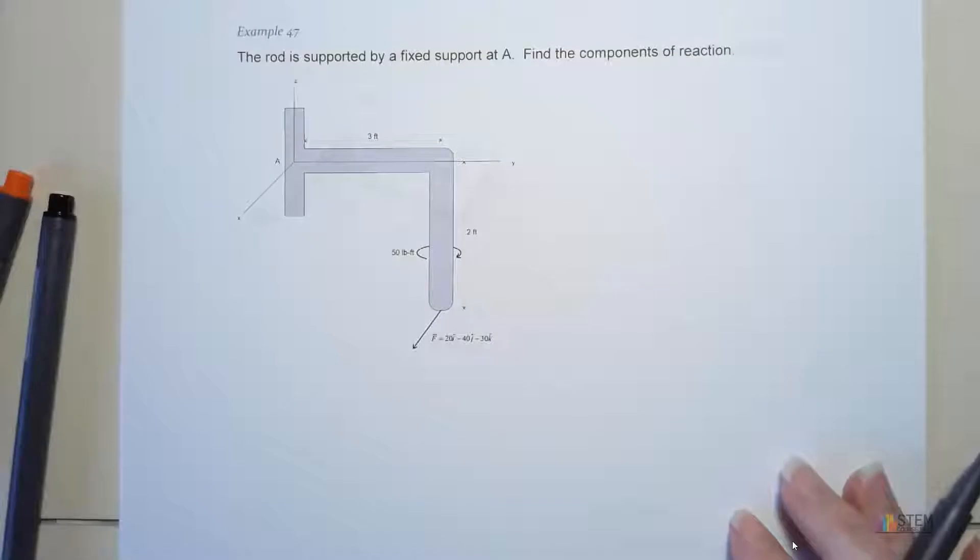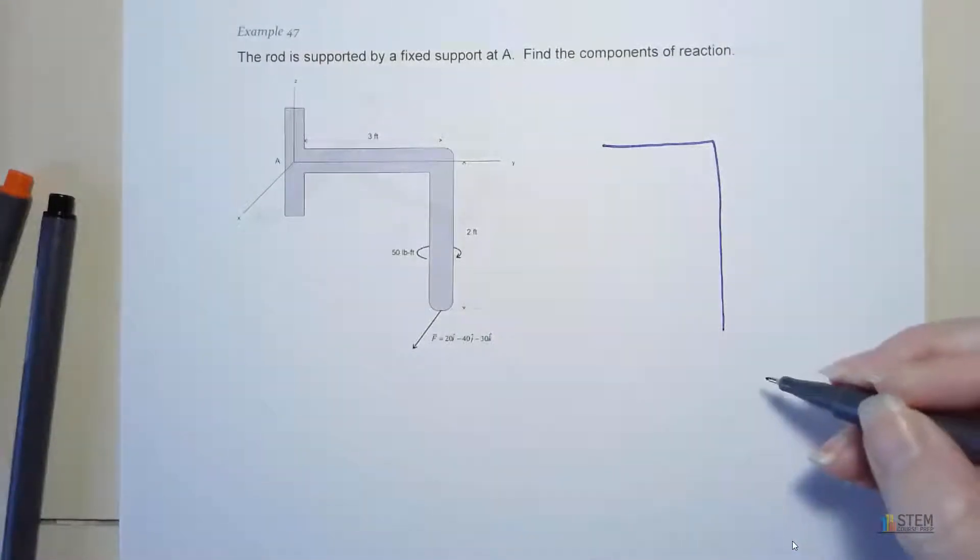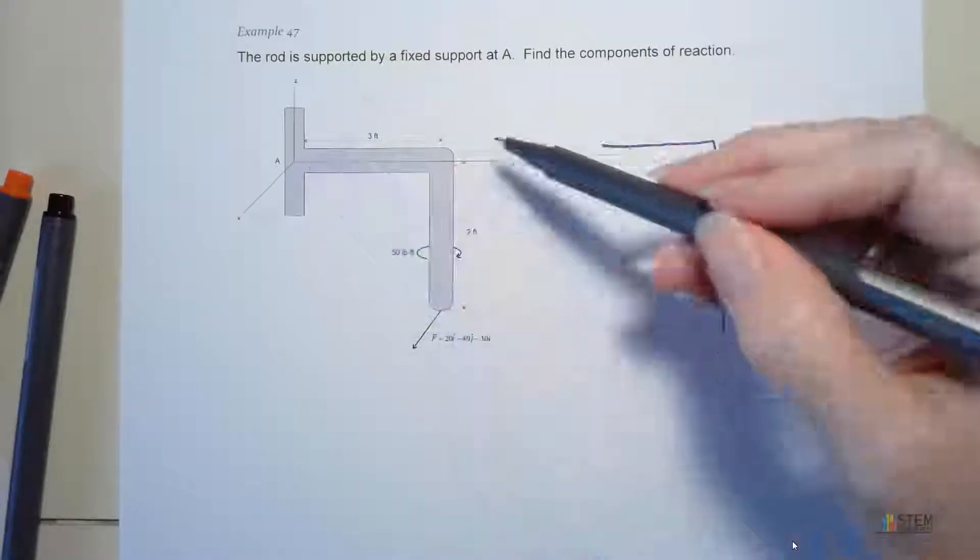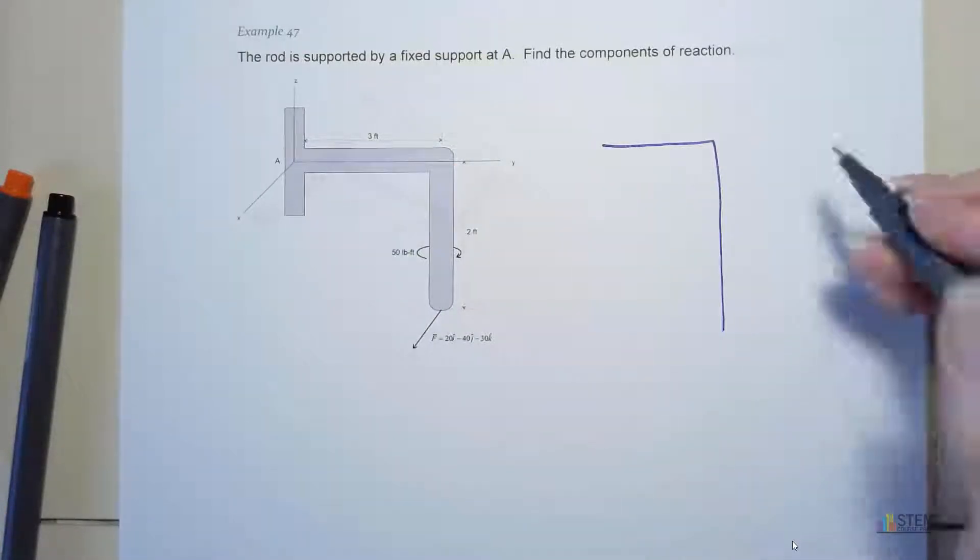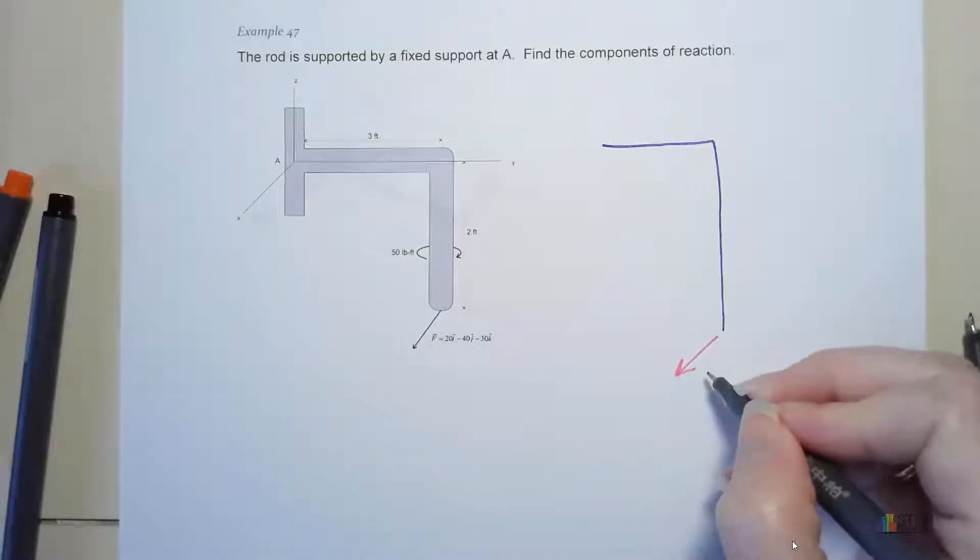First thing we want to do, we want to draw out the free body diagram. So let's do that, represents this rod. All the forces act on that. Now let's go ahead and put the forces on here.